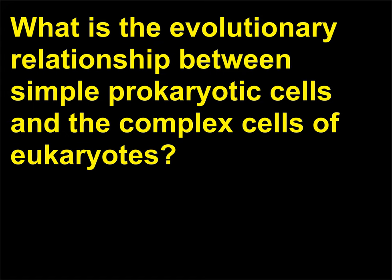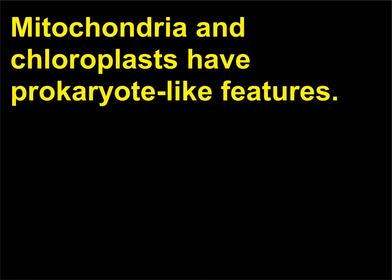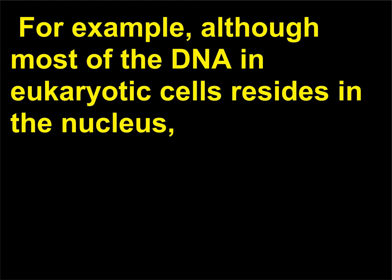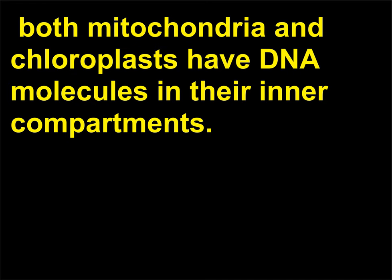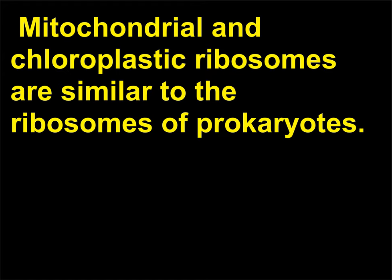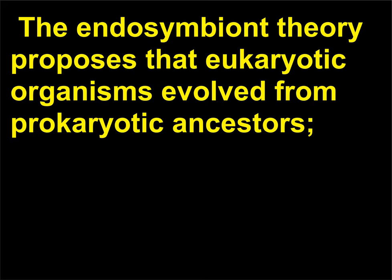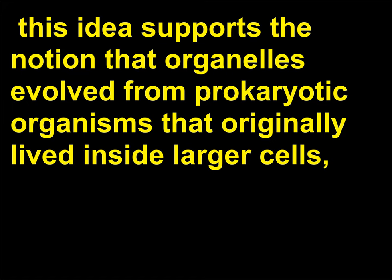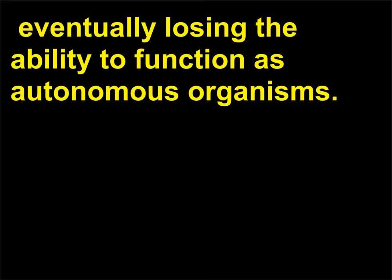What is the evolutionary relationship between simple prokaryotic cells and the complex cells of eukaryotes? Mitochondria and chloroplasts have prokaryote-like features. For example, although most of the DNA in eukaryotic cells resides in the nucleus, both mitochondria and chloroplasts have DNA molecules in their inner compartments. Mitochondrial and chloroplastic ribosomes are similar to the ribosomes of prokaryotes. The endosymbiont theory proposes that eukaryotic organisms evolved from prokaryotic ancestors, supporting the notion that organelles evolved from prokaryotic organisms that originally lived inside larger cells, eventually losing the ability to function as autonomous organisms.